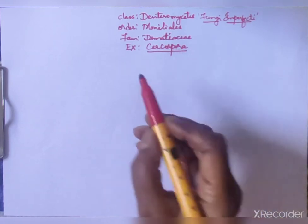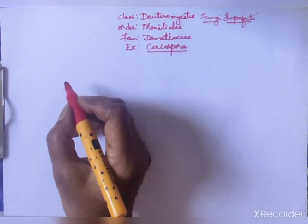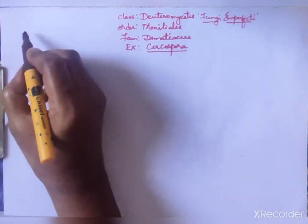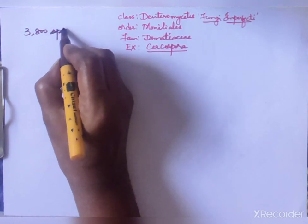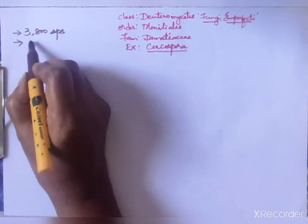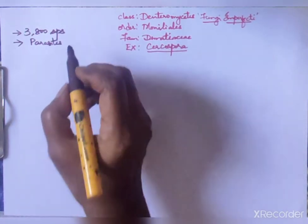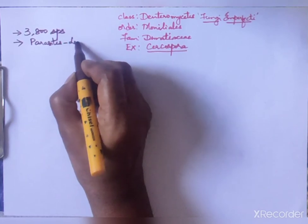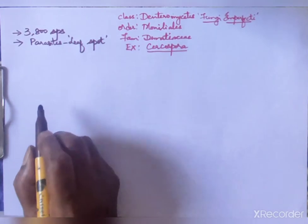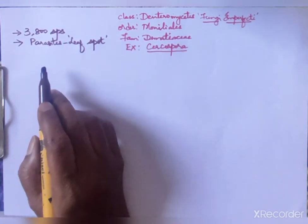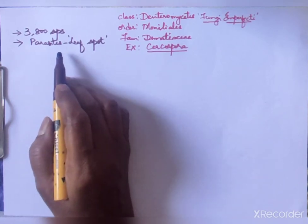There are about three thousand eight hundred species of Cercospora, and most of them live as parasites on flowering plants. They cause a disease called leaf spot disease.